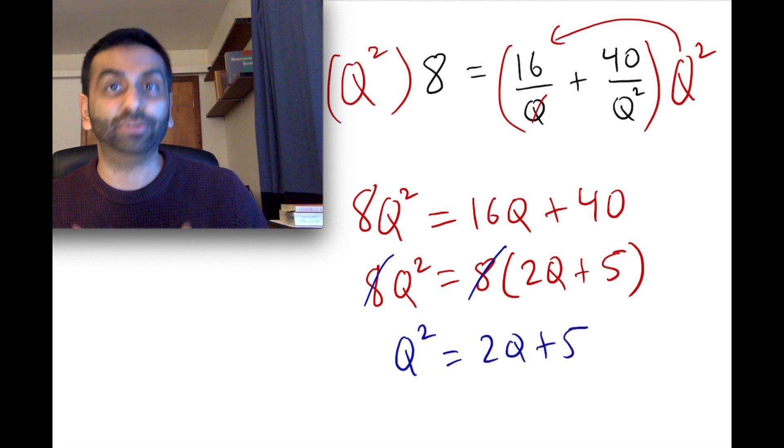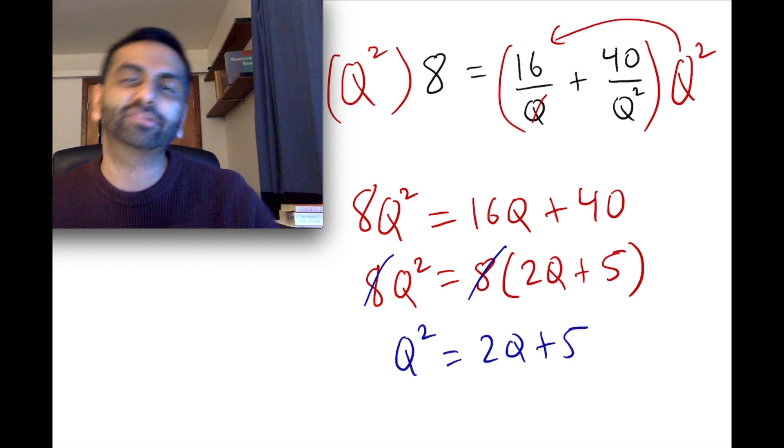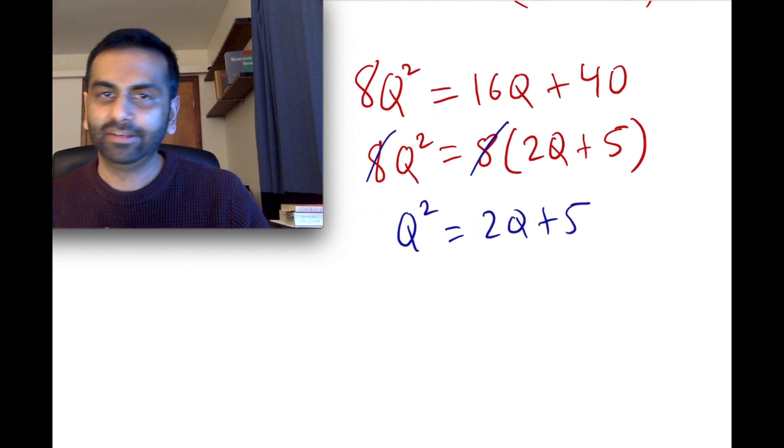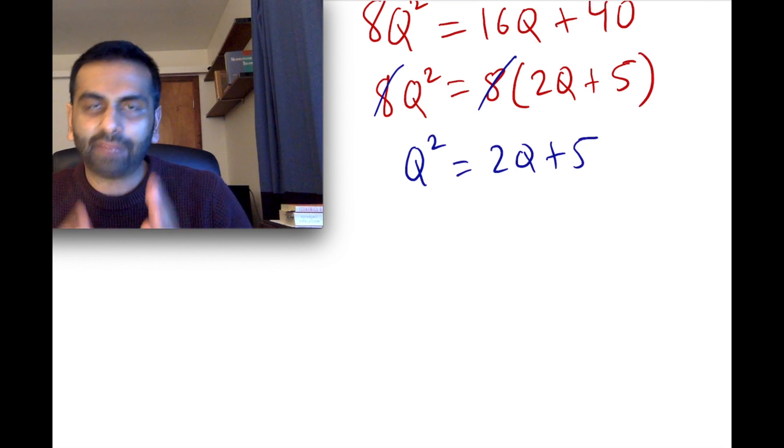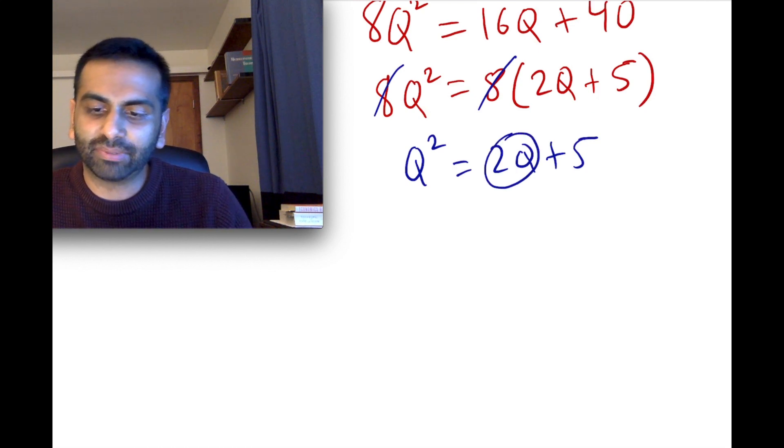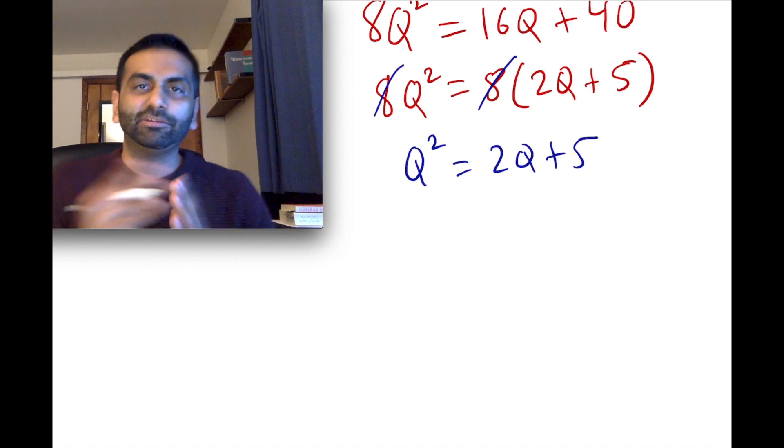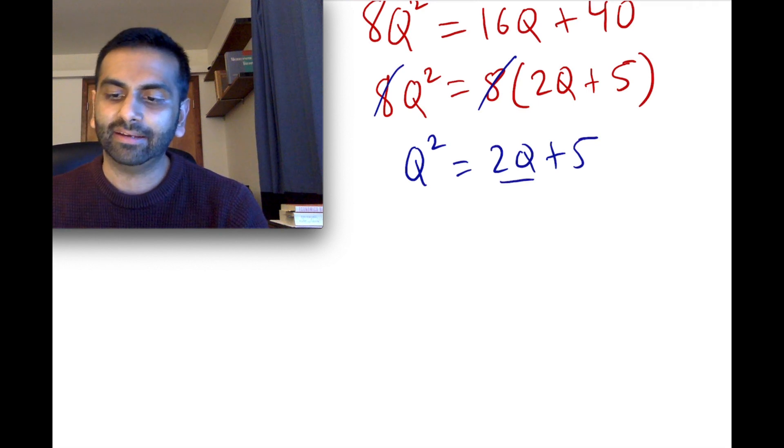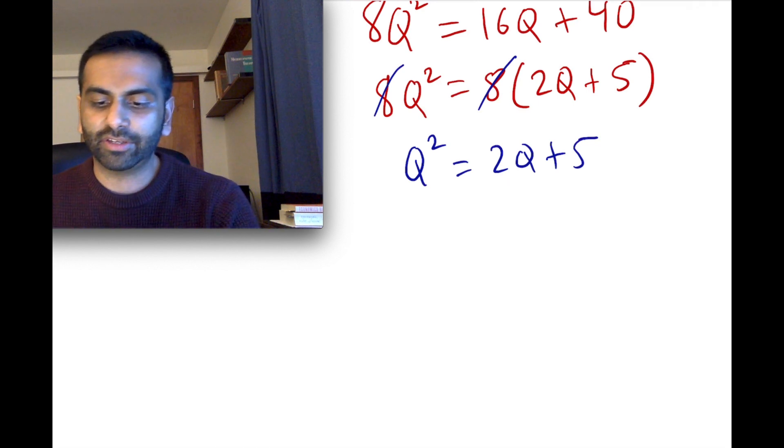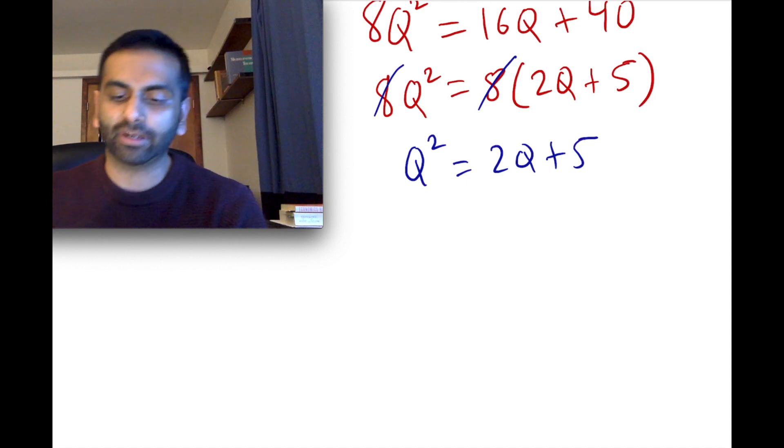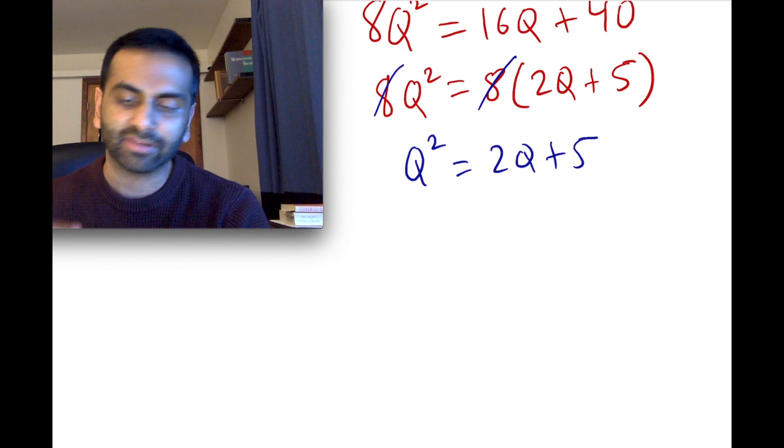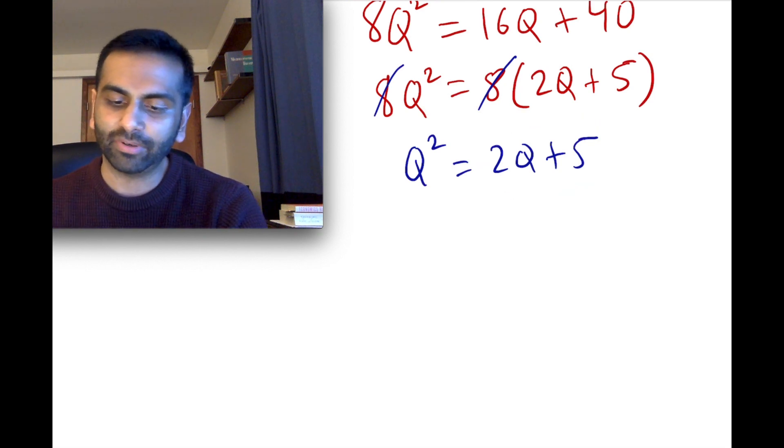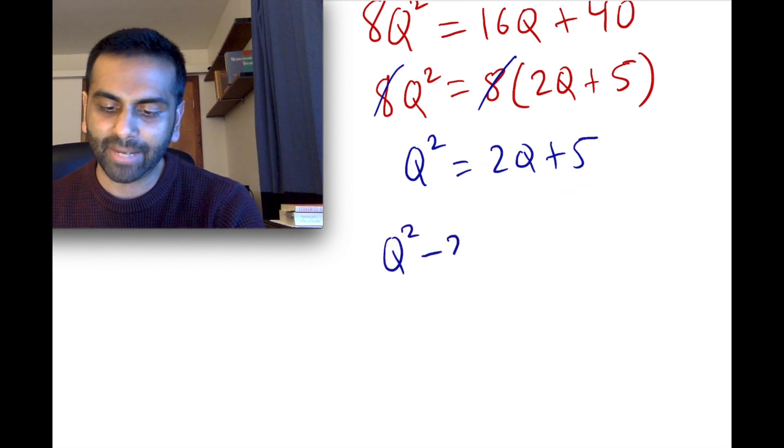And again, if you didn't do that stuff, you'd still get the right answer. You might just have bigger numbers, and then you have to simplify at the end. It really doesn't matter. So now, a lot of people instinctively will try to just put this on the other side and get q's by itself. But again, that only works for linear equations or for quadratic equations where it doesn't have the x term, just the x squared term. But in other cases, for a full-fledged quadratic equation, the best way to do it is to put everything on one side. So we're going to subtract this from both sides. So we get q squared minus 2q minus 5 equals 0.